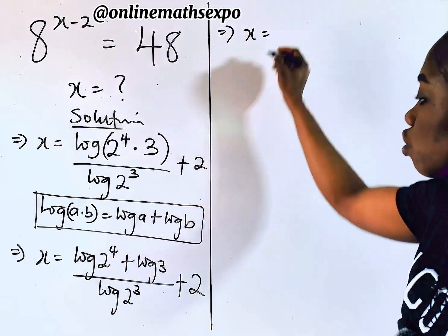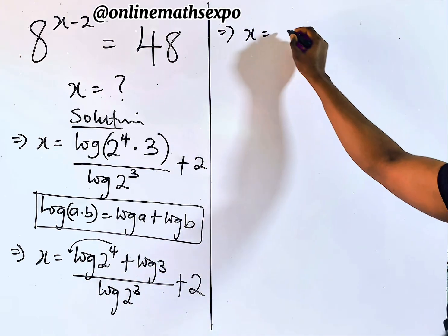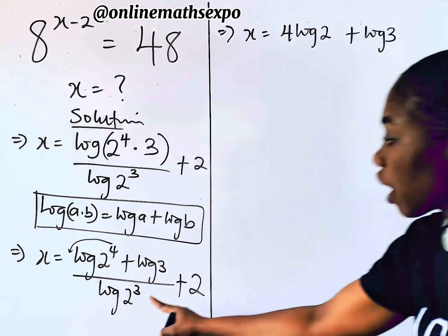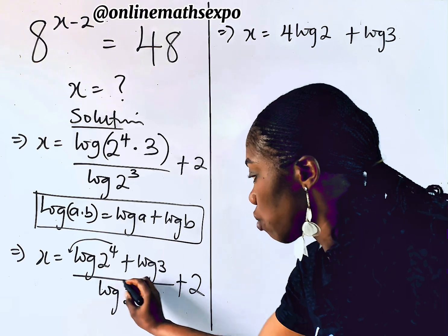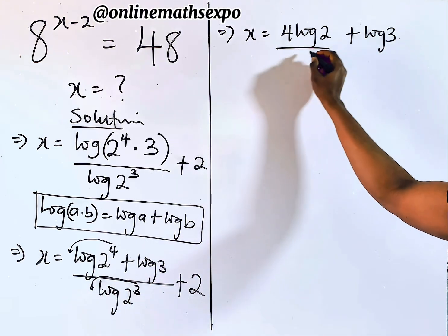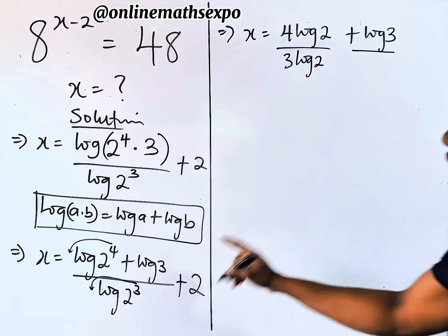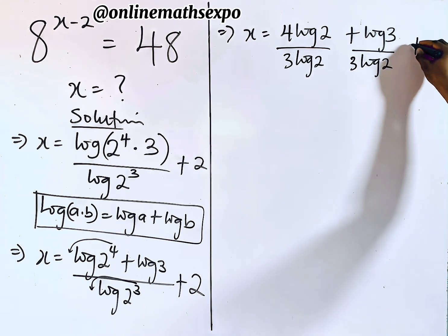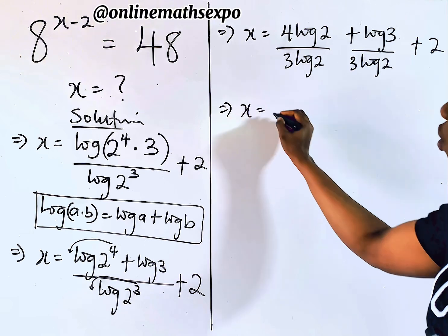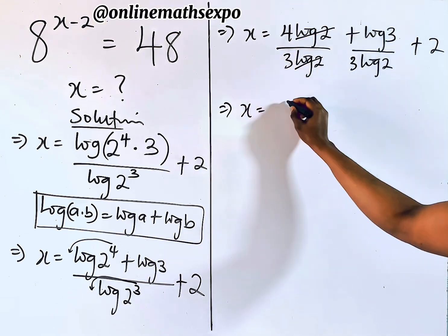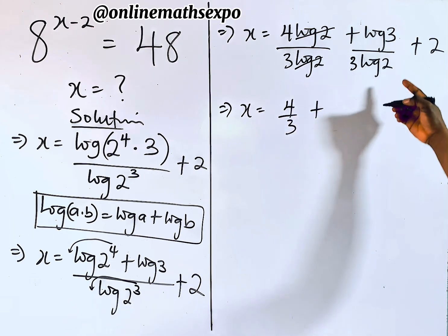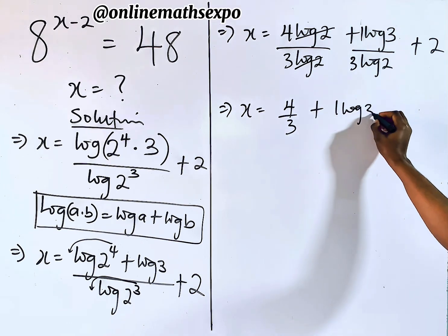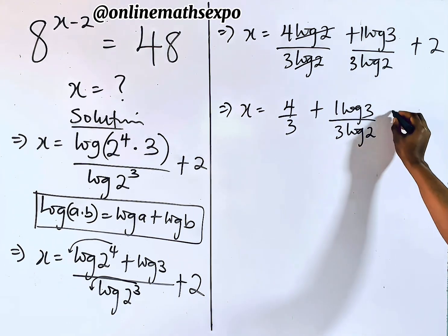Keep solving. x equals — bringing down the powers: 4·log(2) plus log(3), all divided by 3·log(2), plus 2. We can use the denominator to divide each numerator term: 4·log(2) divided by 3·log(2), plus log(3) divided by 3·log(2), plus 2. The log(2) terms cancel in the first fraction, giving 4/3.